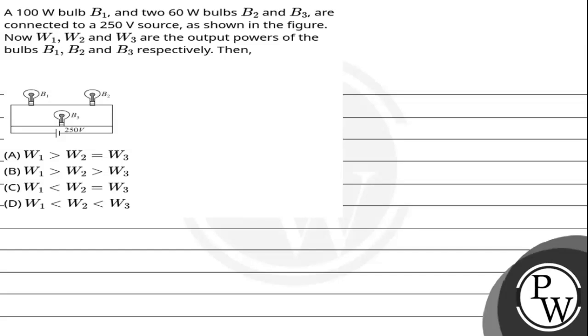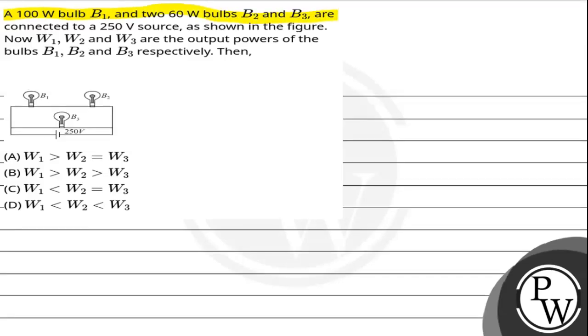Hello Bacho, let's read this question. The question says a 100 watt bulb B1 and two 60 watt bulbs B2 and B3 are connected to a 250 volt source as shown in the figure.